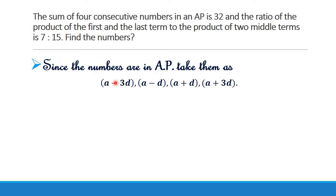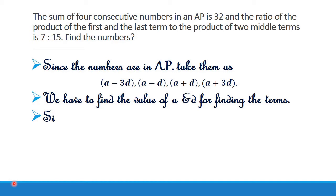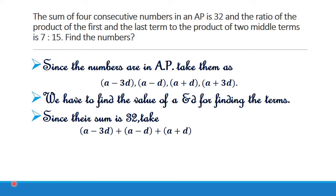Why are we taking them like this? Because when we add these numbers, we can cancel all the D's and only A will remain. We have to find the value of A and D. So take their sum equal to 32: A minus 3D plus A minus D plus A plus D plus A plus 3D equals 32.